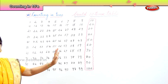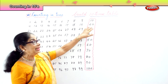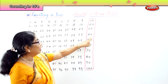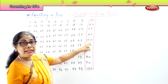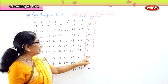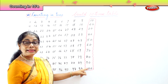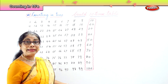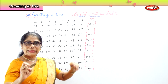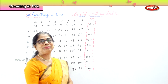10 times table: 10, 20, 30, 40, 50, 60, 70, 80, 90, 100. Skip counting — only 10. Right? 10, 20... 100.